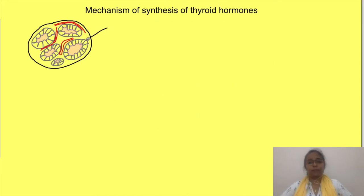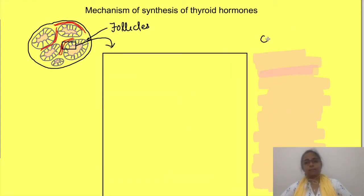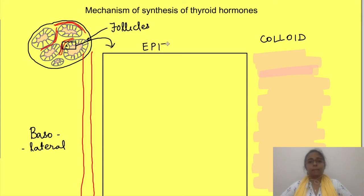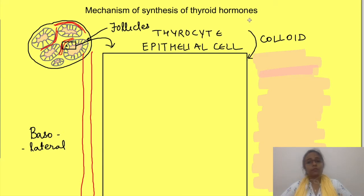Here is shown a diagram of the follicles of the thyroid gland. If we magnify this portion, we can represent it in a diagram where this side depicts the colloid, this side is the basolateral side with blood vessels, and this represents the epithelial cell lining the follicles, or thyrocytes. The membrane of the epithelial cell facing towards the colloid is the apical membrane, while the other sides are the basolateral membrane.